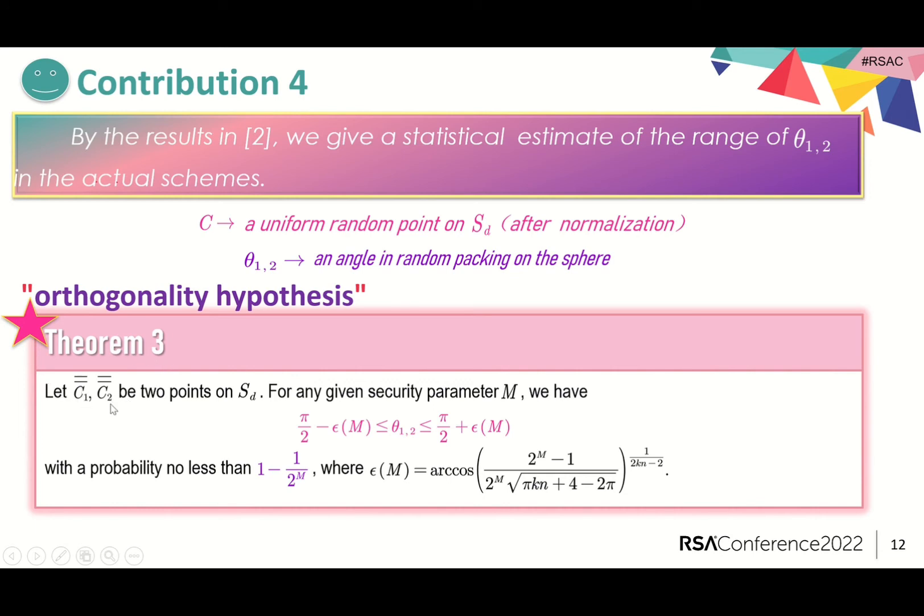Let C_1, C_2 be two points on IC. They can also be regarded as two queries by the attacker. For security parameter m, the probability that pi over 2 and theta_{1,2} differ within epsilon_m is no less than 1 minus 1 over 2^m, where epsilon_m can be calculated using this formula.